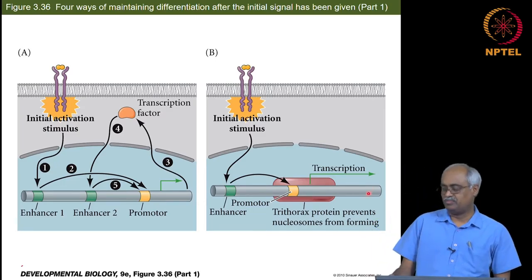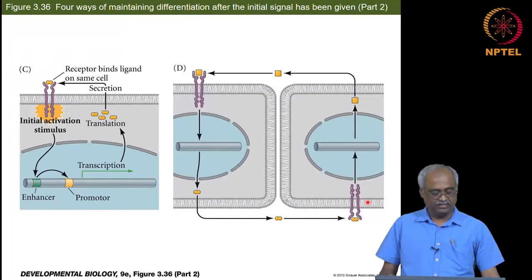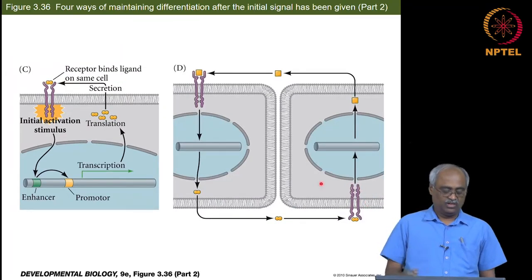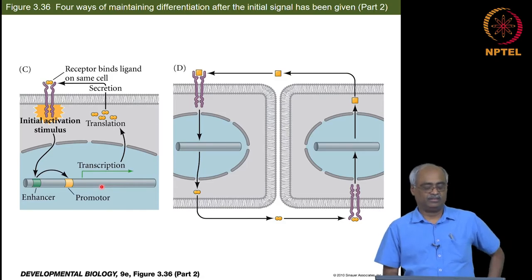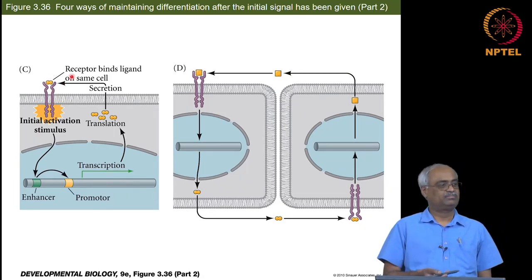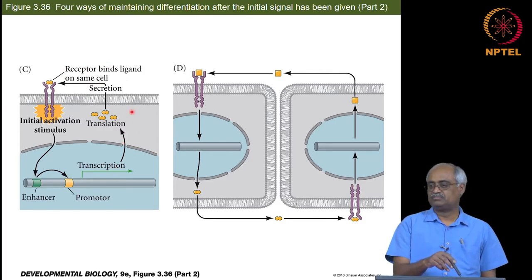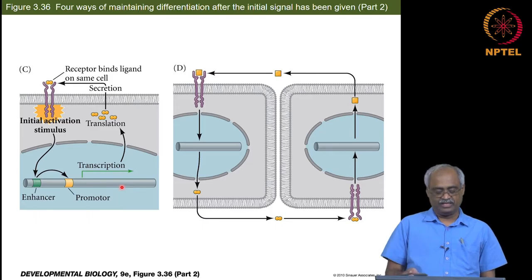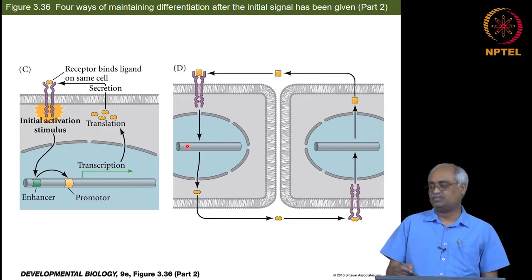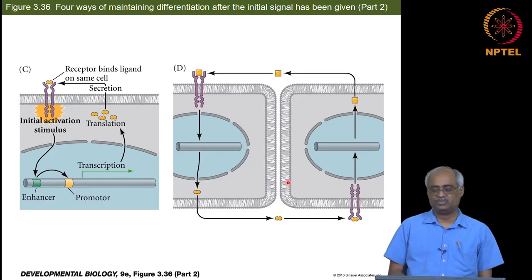A third mechanism: one of the downstream activated targets may be coding for the same ligand, so it keeps cycling. A small variation of that is the ligand is produced by an adjacent cell, so signalling continues.